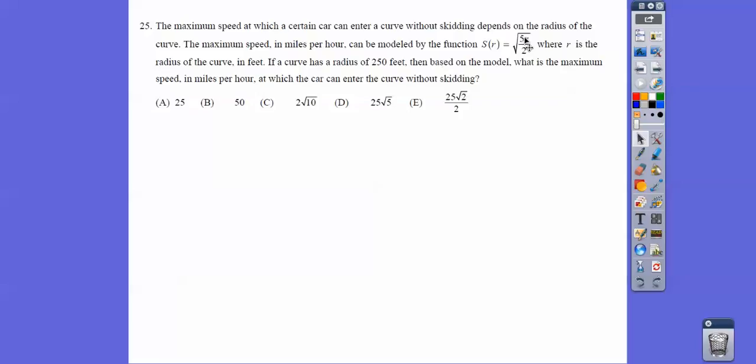We're going to plug in 250 right there and solve. So five times 250, two goes into 250 125 times, so five times 125 is 625, and the square root of 625 is 25. All right, I'm going to stop there and do the second part next. All right, take care.